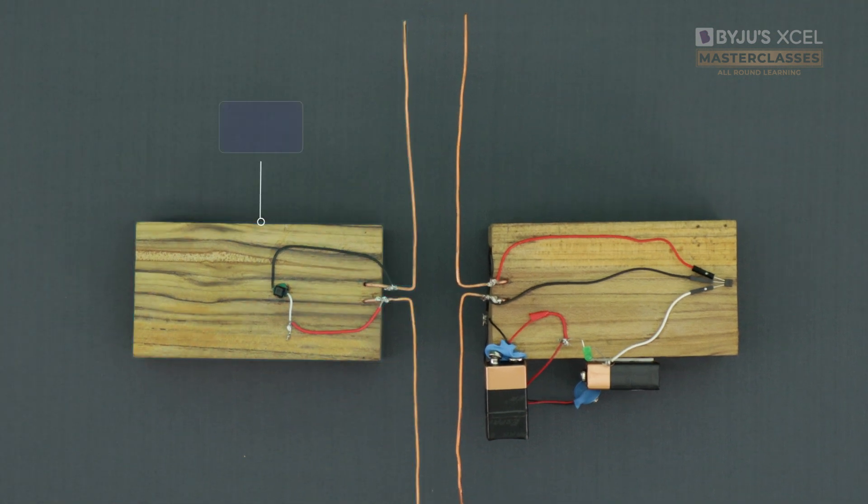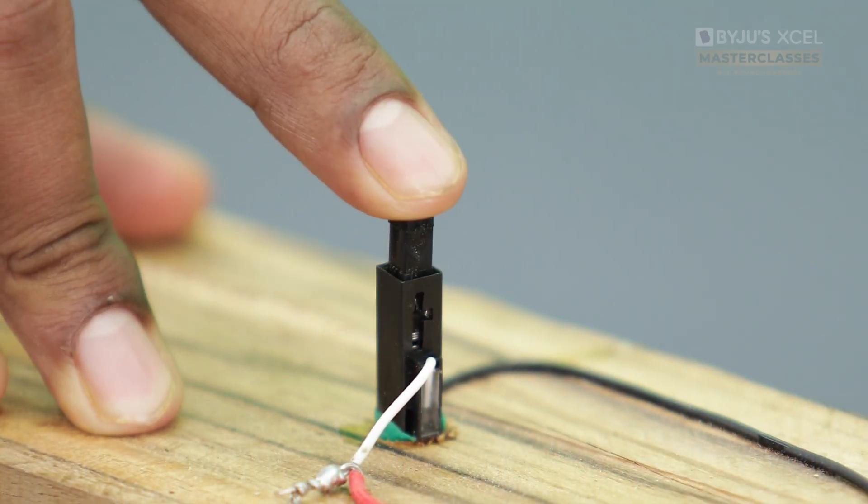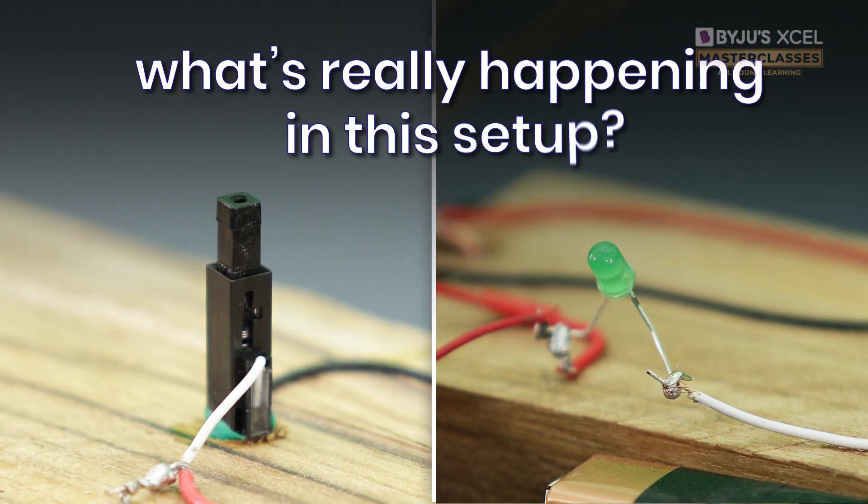In this setup, there is a transmitter and a receiver. When the switch on the transmitter circuit is pressed, we observe that the bulb on the receiver glows for a fraction of a second. So what's really happening in this setup?